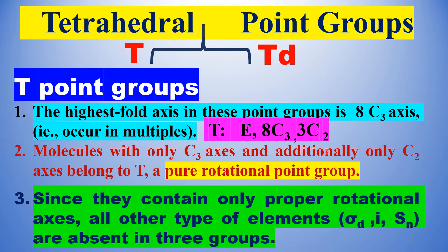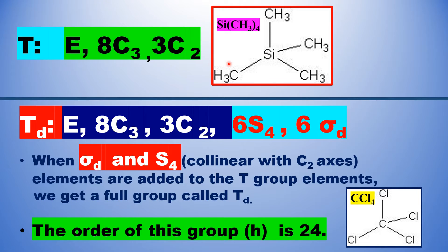The three C2 subsidiary axes lie along the x-axis, y-axis, and z-axis. The T point group consists of only rotational axes of symmetry — it is called a pure rotational point group because it does not contain any plane of symmetry, center of inversion, or improper axis of symmetry. Those are all absent. For example, Si(CH3)4 is an example of the T point group, which consists of E, 8C3, and 3C2 symmetry operations.